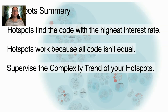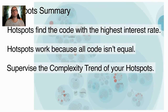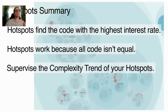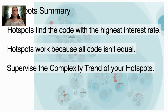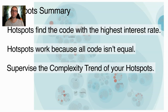To sum up this first part: hotspots help us identify the code with the highest interest rate so we can inspect them for accumulated technical debt in areas where we have the largest return on investment. The reason this works is because all code isn't equal — development activity varies widely across different modules. Hotspots help us separate stable parts of the code from the more volatile that need our attention. And complexity trends let us supervise hotspots to prevent the normalization of deviance.